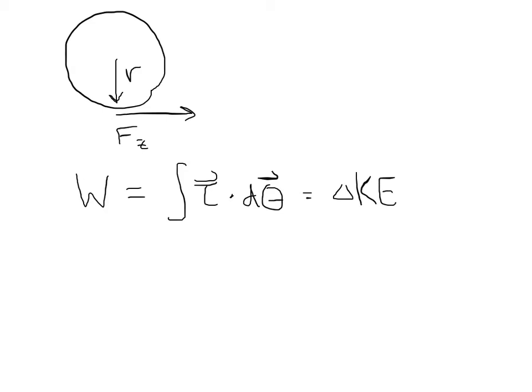The change in kinetic energy in this case is one-half I omega final squared minus one-half I omega initial squared. Since omega initial, since you're starting from rest, omega initial is just going to be zero. So the torque exerted over some angle is just going to be equal to one-half I omega final quantity squared.